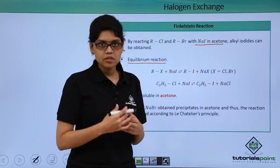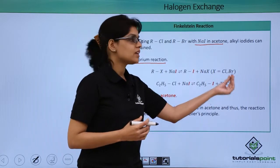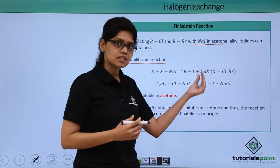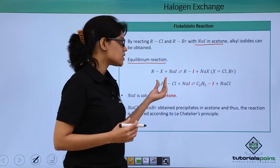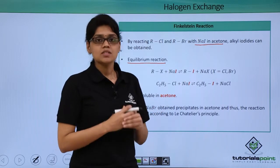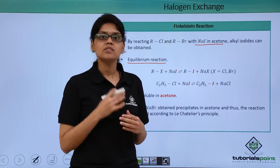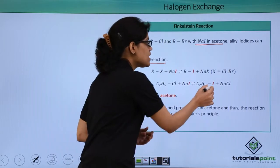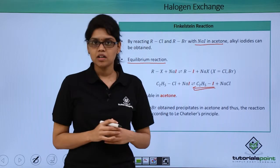Since it is an equilibrium reaction, Cl- can attack the C2H5I (ethyl iodide) and give us ethyl chloride and NaI as byproducts. So how do we drive this reaction in the forward direction to obtain alkyl iodide as the final product?